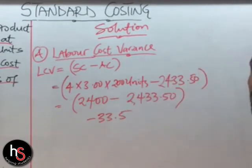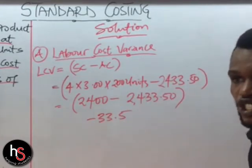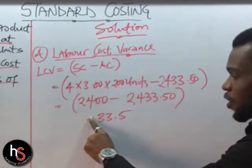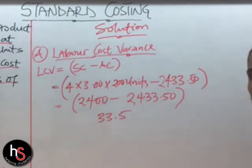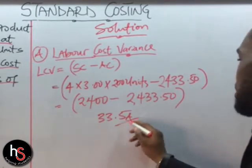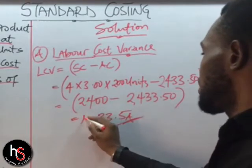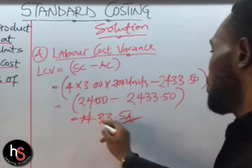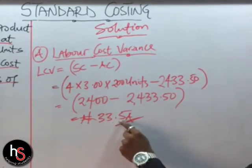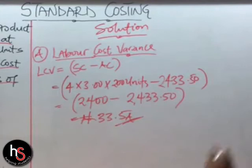As I told you in standard costing generally, once you have a negative sign, we don't make use of it — we write 'Adverse' instead. So 4 times 3 times 200 gives us 2,400. Then 2,400 minus 2,433.50 gives us negative 33.50. So the final answer for question number one, the labor cost variance, is 33.50 Adverse.